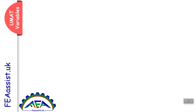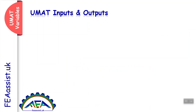The next important thing about any subroutine, especially UMAT, is its inputs and outputs. UMAT is like a machine: it accepts some inputs, processes those inputs, and exports the processed results as output.